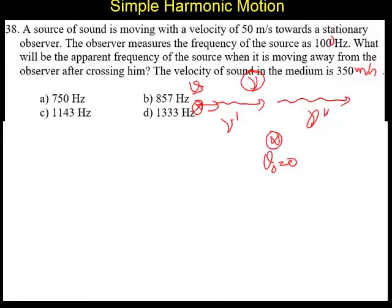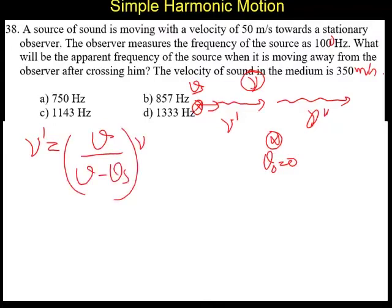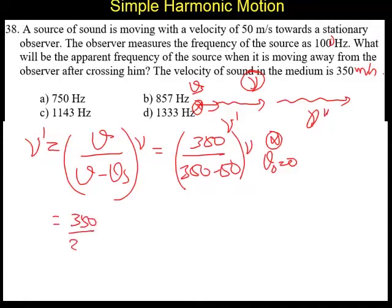The frequency of source is given as ν. First case, when the source is approaching the observer, the apparent change in frequency ν dash is V by V minus Vs into ν. In this case V is given as 350, so it is 350 by 350 minus 50 into ν. So it is 350 by 300 ν equals ν dash. Therefore, ν is going to be 300 by 350 ν dash.